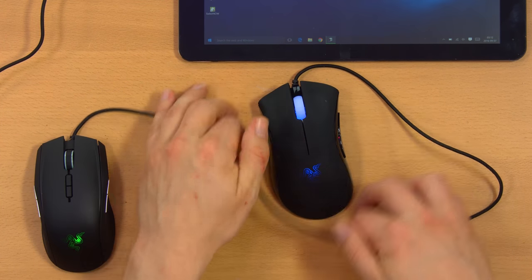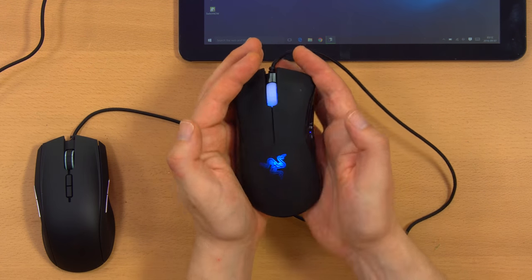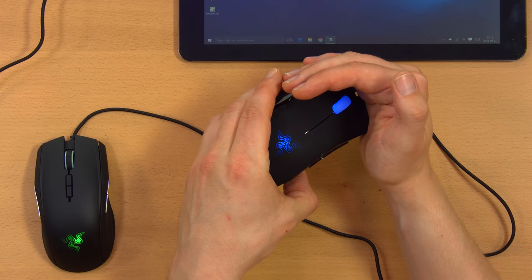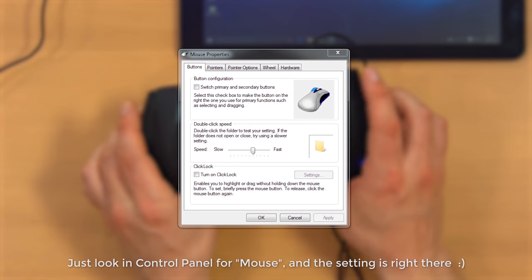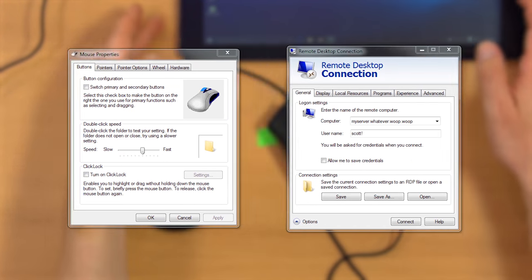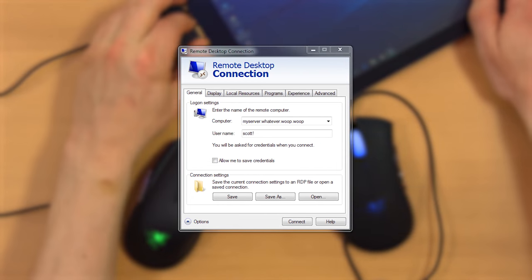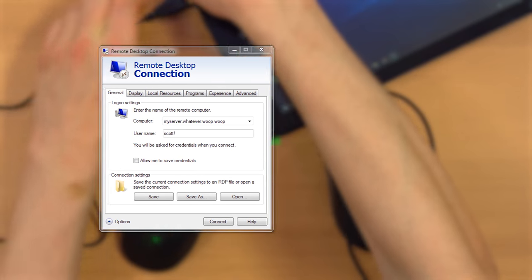Not wanting to buy yet more mice, I figured I'd try and swap the left and right buttons on the Deathadder. By the way, I know you can swap the two buttons in software on Windows and most other operating systems. The problem I found was that in a remote desktop session, the buttons do not follow the client, but rather the remote host.